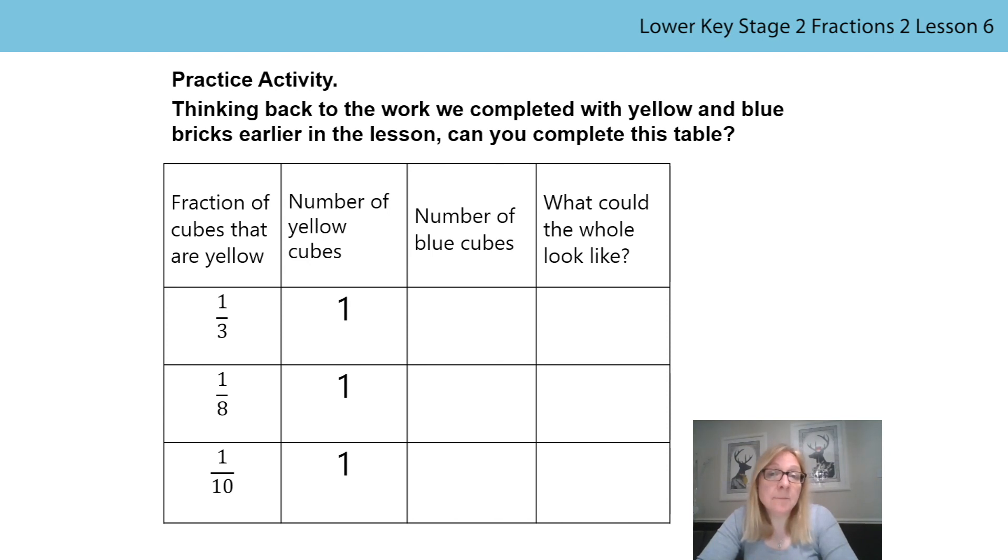In the first example, we know that one-third of the cubes are yellow. I know then that there must be three equal parts or three bricks. If one of the bricks is yellow, then how many will be blue? Well done if you said there will be two blue cubes. It then asks what the whole could look like. You may like to build this again first and then draw a representation into the table. Mine looks like this. As long as your model has three equal parts, one in yellow and two in blue, then you are correct. If you wanted, you could investigate how many different representations you could find for each question.